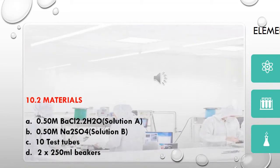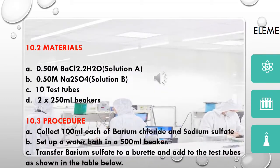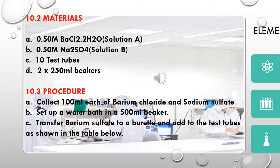Materials: A. 0.5 molar Barium Chloride, labeled as A. B. 0.5 molar Sodium Sulfate, labeled as B. C. 10 test tubes. D. 2 × 50 milliliter beakers.